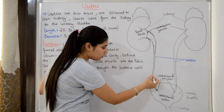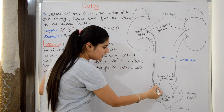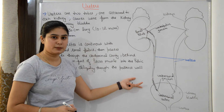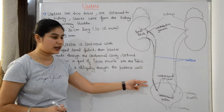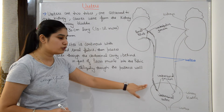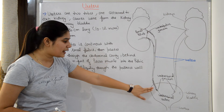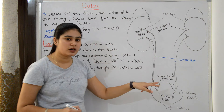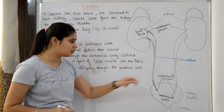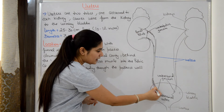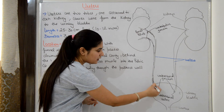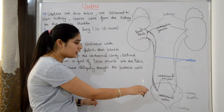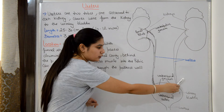When the ureter enters the bladder, it enters through the posterior wall of the urinary bladder at the ureterovesical junction. It does not enter straight — it enters obliquely.